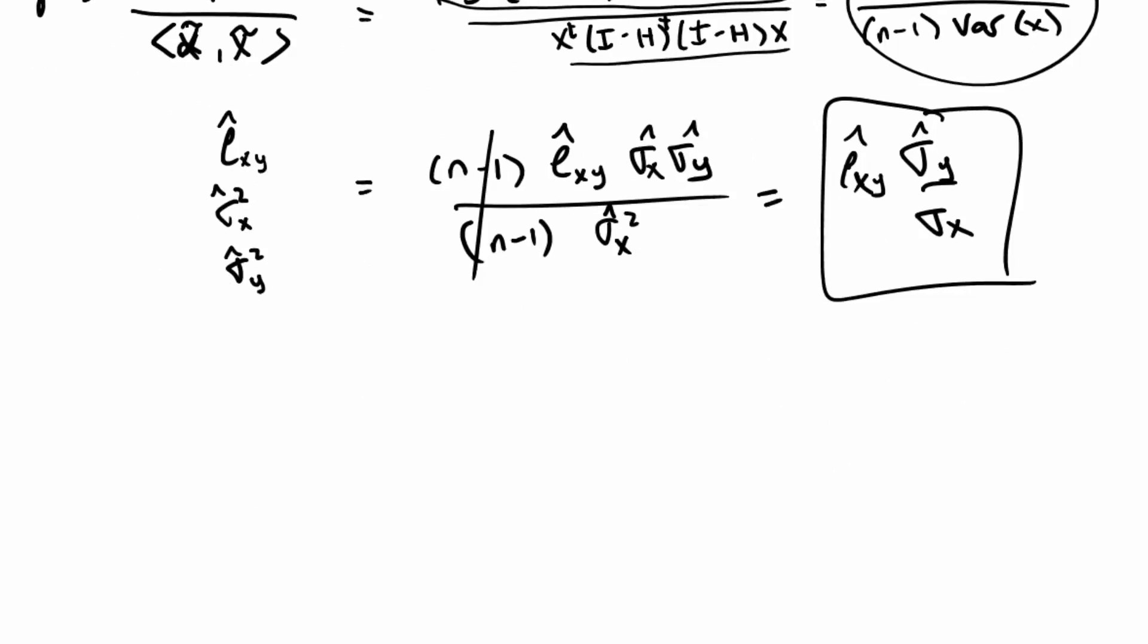And that's basically saying that the slope, if we were to center our outcome and center our regressor and fit the regression to the origin, the slope of the best fitting regression line is the correlation between the y and the x, the estimated correlation between the y and the x, times the ratio of the standard deviations.